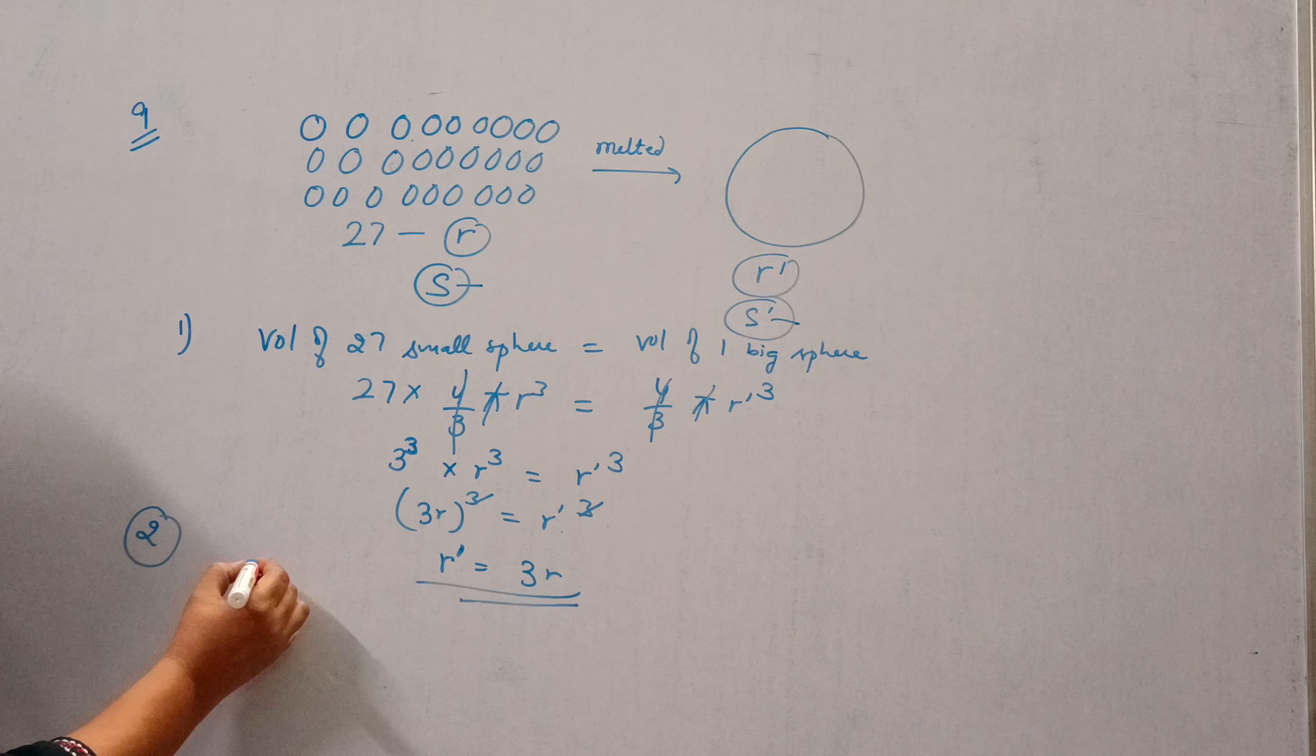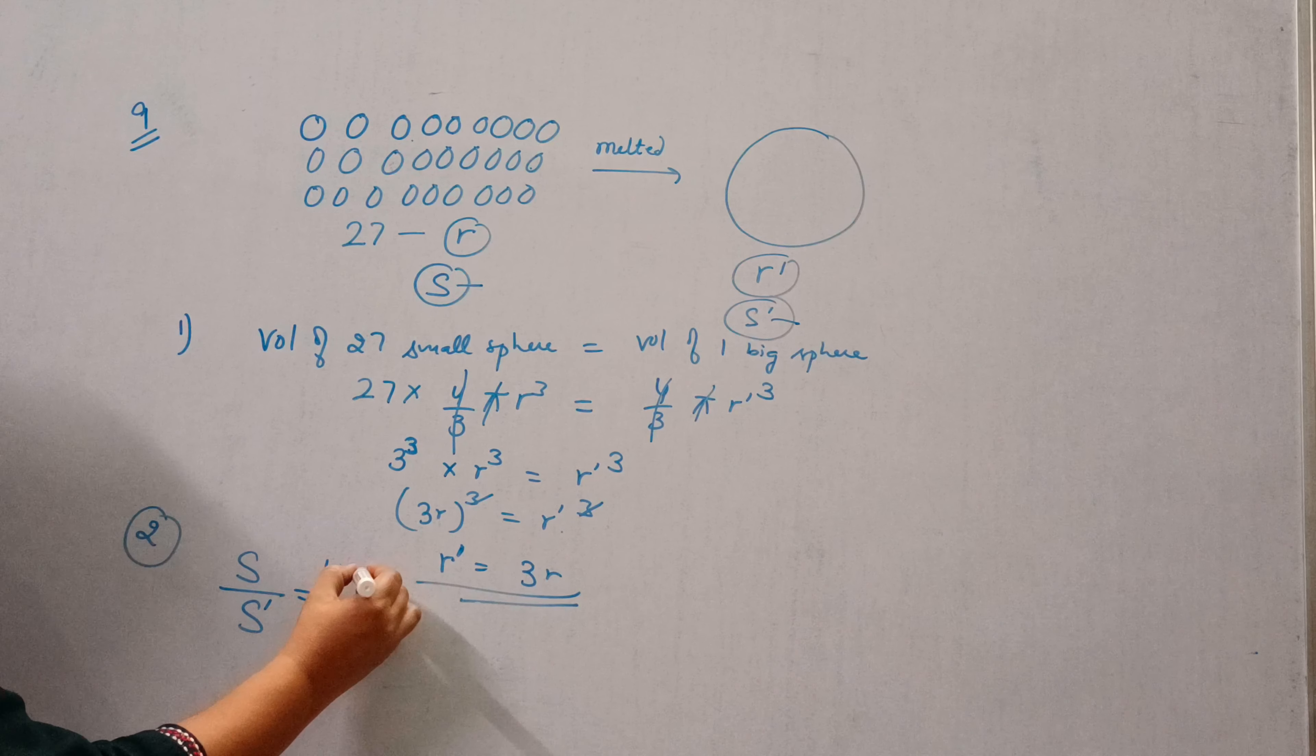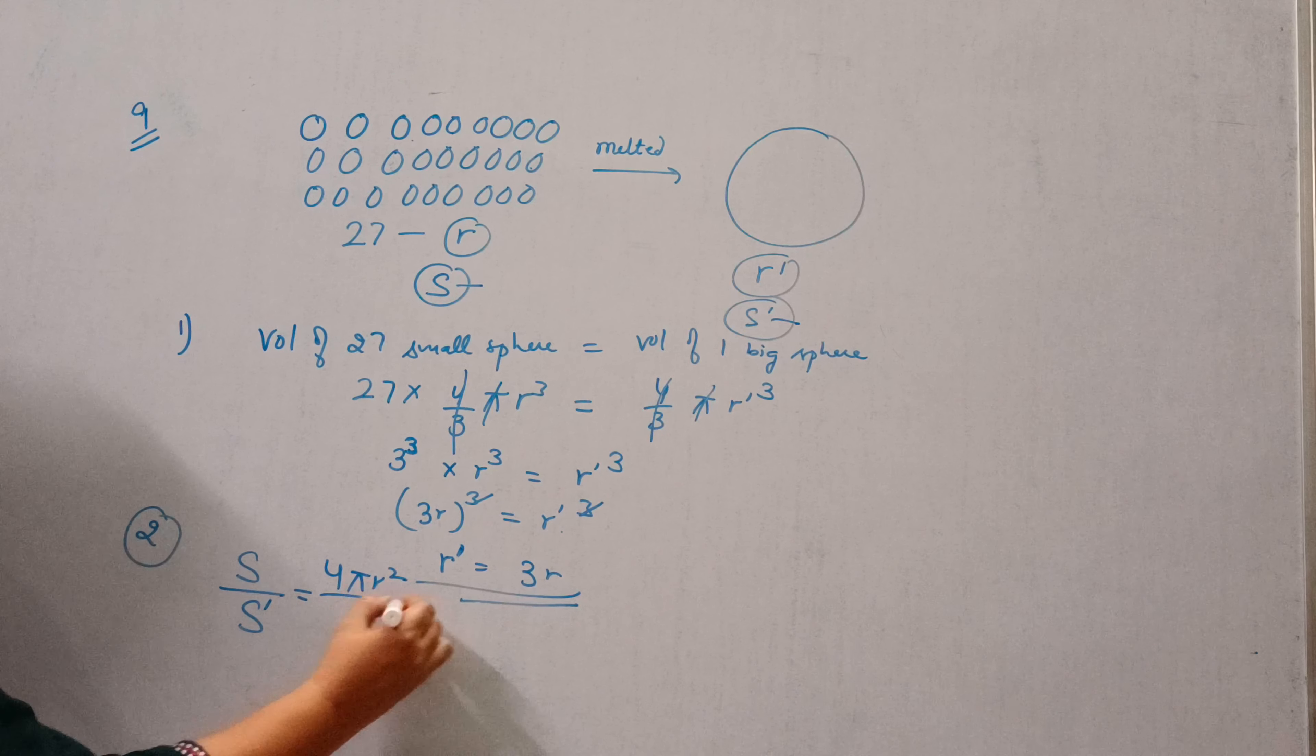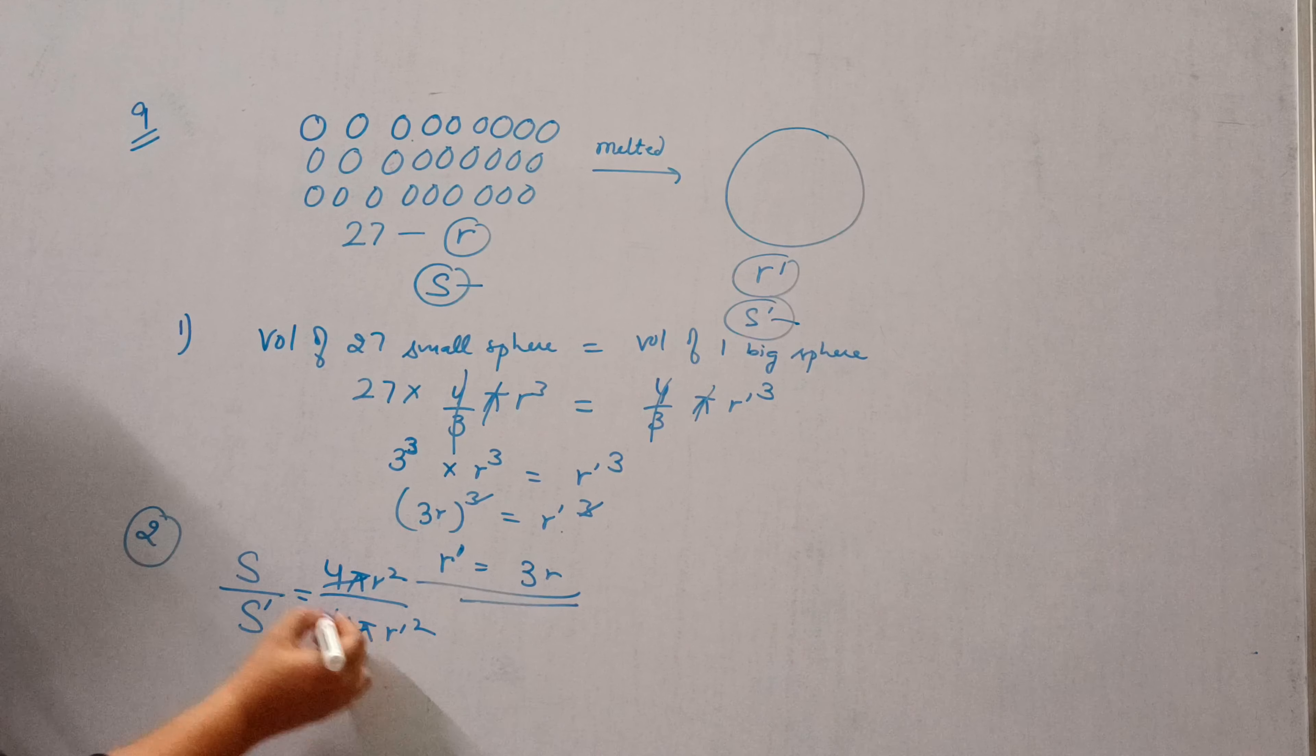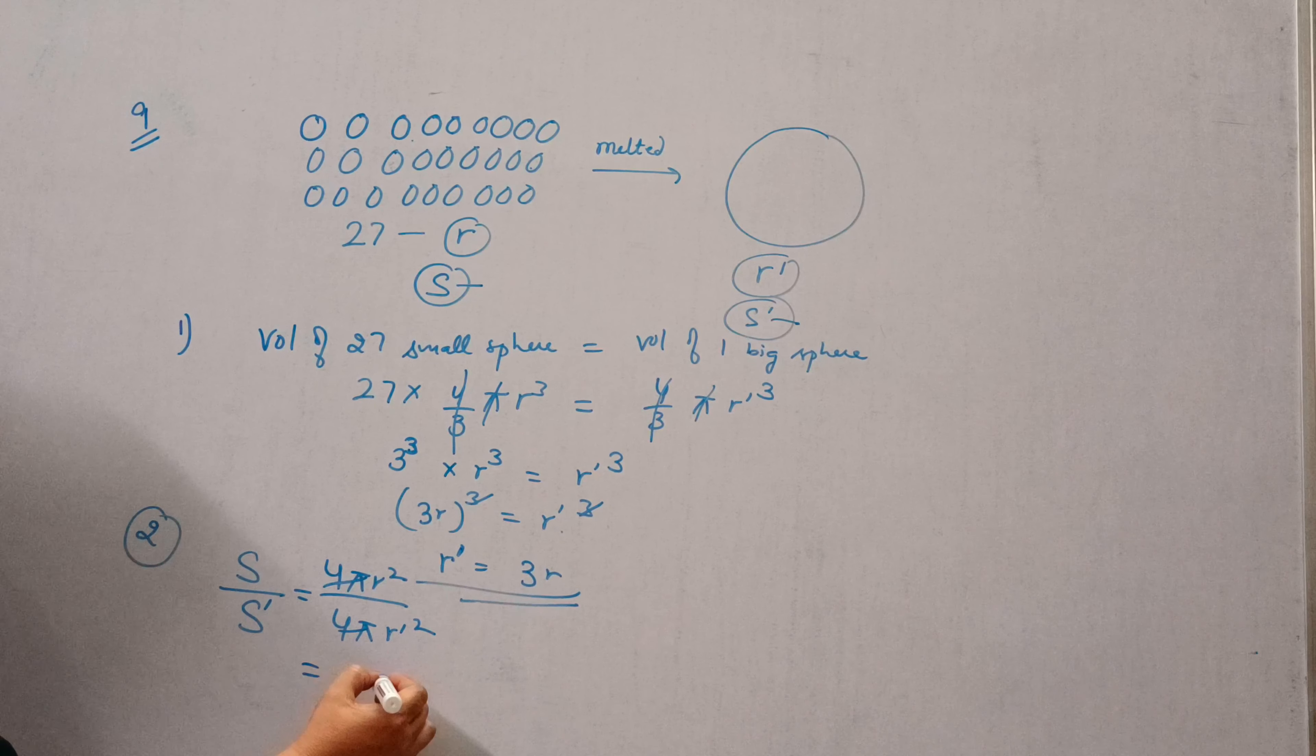Now second, in the second part we need to find the surface area of small sphere and the big sphere. So surface area is 4 pi R square and for big sphere it is 4 pi R dash square. Cut 4 pi by 4 pi, R is R square and R dash is 3R.